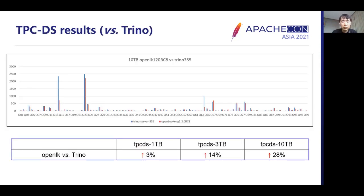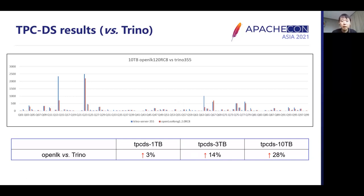Regarding performance improvement, here is the TPC-DS benchmark result comparing OpenLooker and Trino. TPC-DS provides a representative evaluation of performance for general-purpose decision support systems. We can see performance improved significantly as test data increased from 1TB to 10TB. This chart shows all 99 SQL comparisons of OpenLooker release 1.2 and Trino release 355 with 10TB test data.